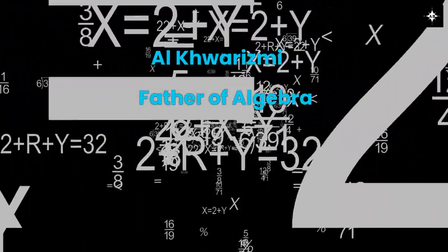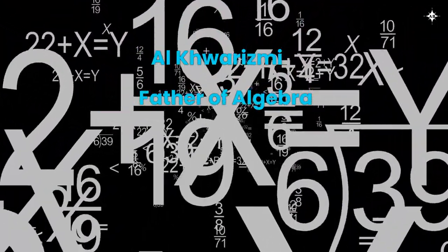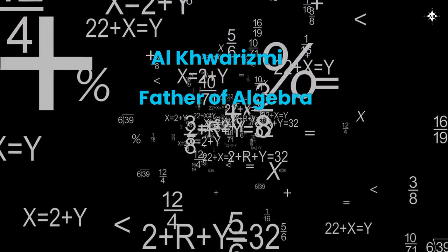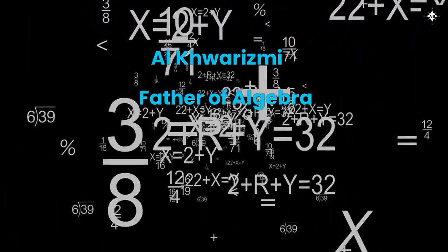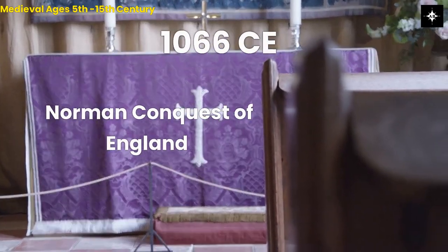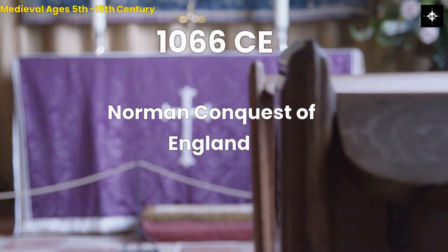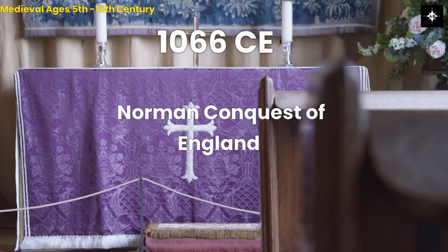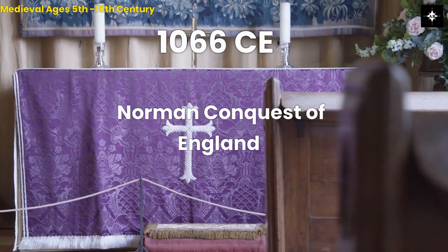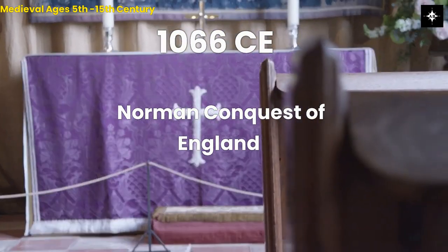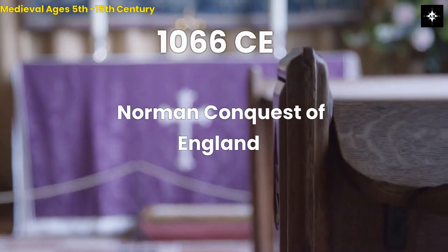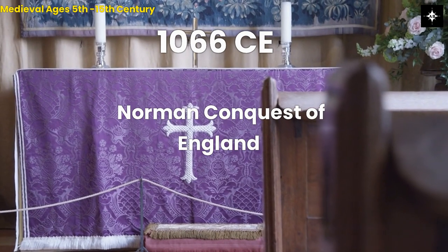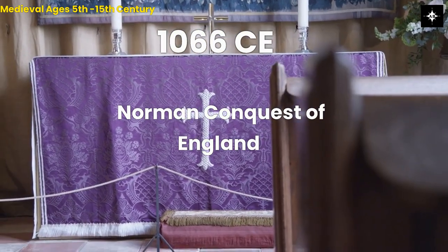Al-Khwarizmi developed a systematic approach to solving equations that involved using a series of steps to simplify and manipulate expressions. Fourth, 1066 CE, the Norman Conquest of England. In 1066 CE, William, Duke of Normandy, successfully invaded and conquered England in the Battle of Hastings, leading to significant political, social, and cultural changes in the country.